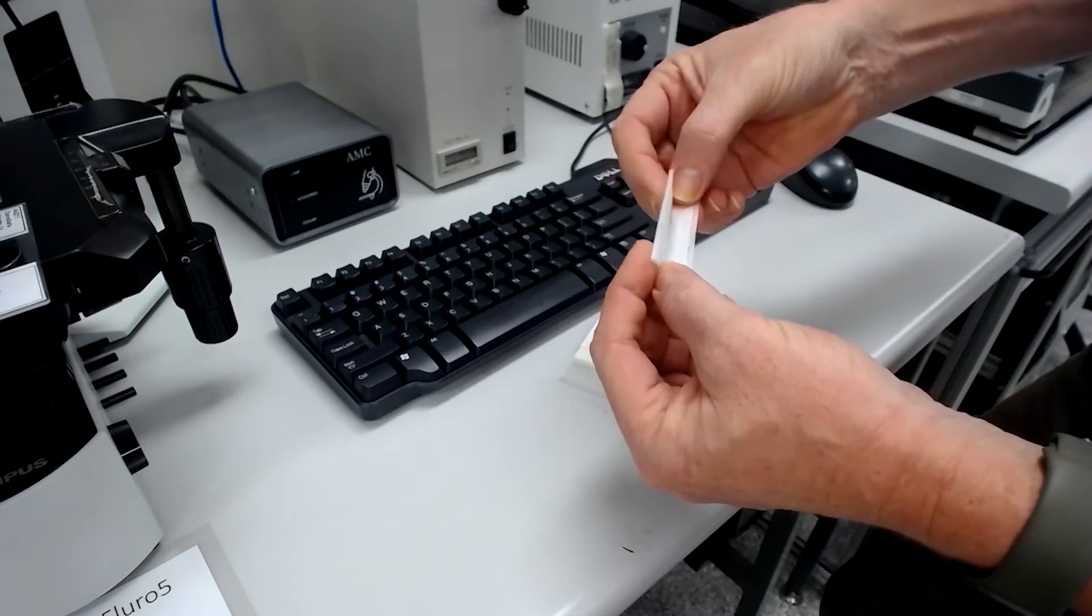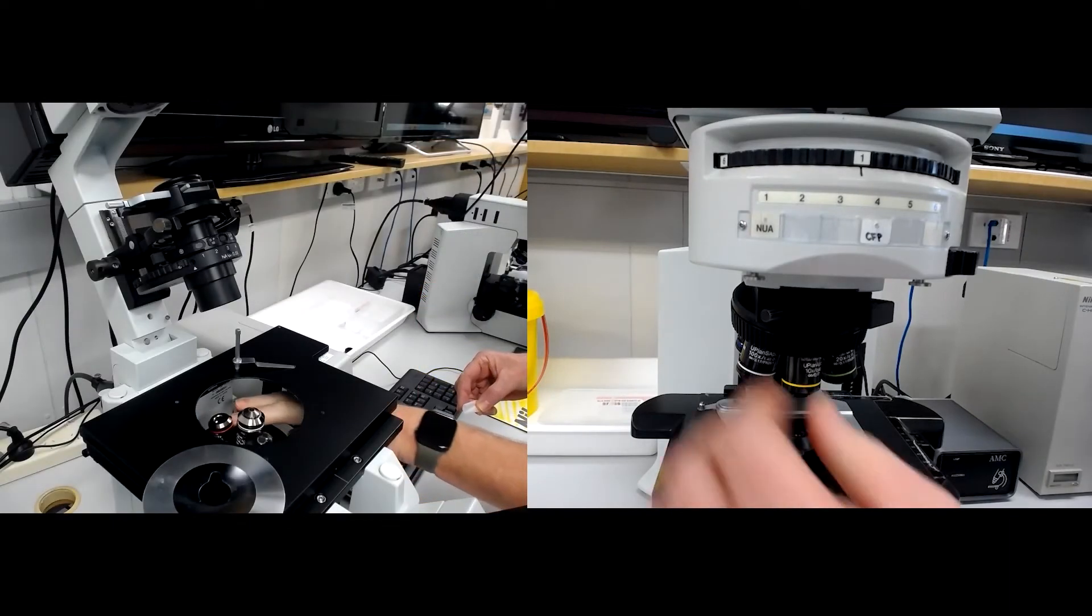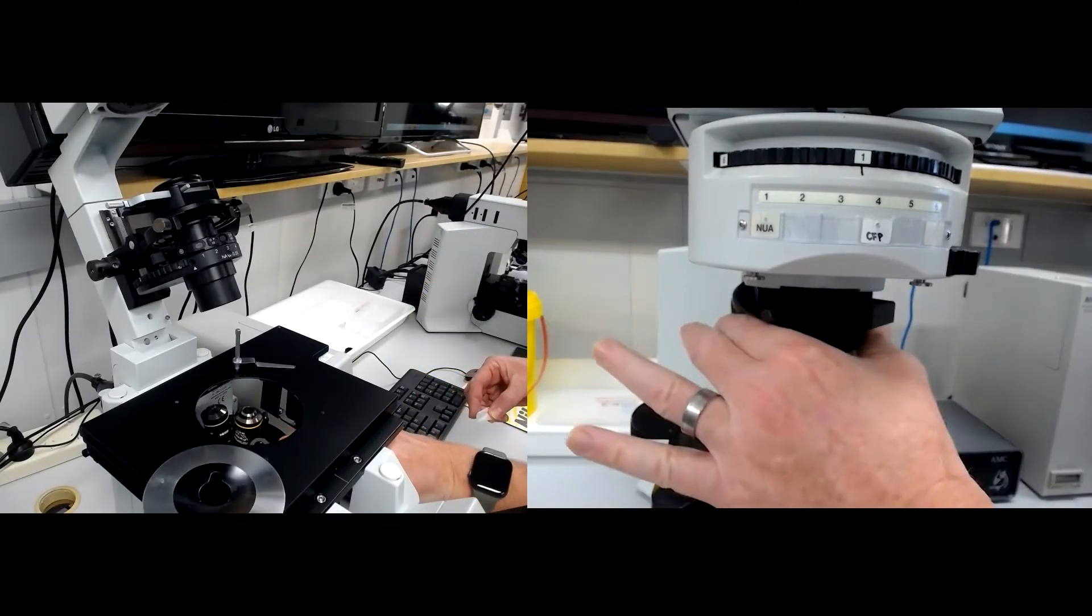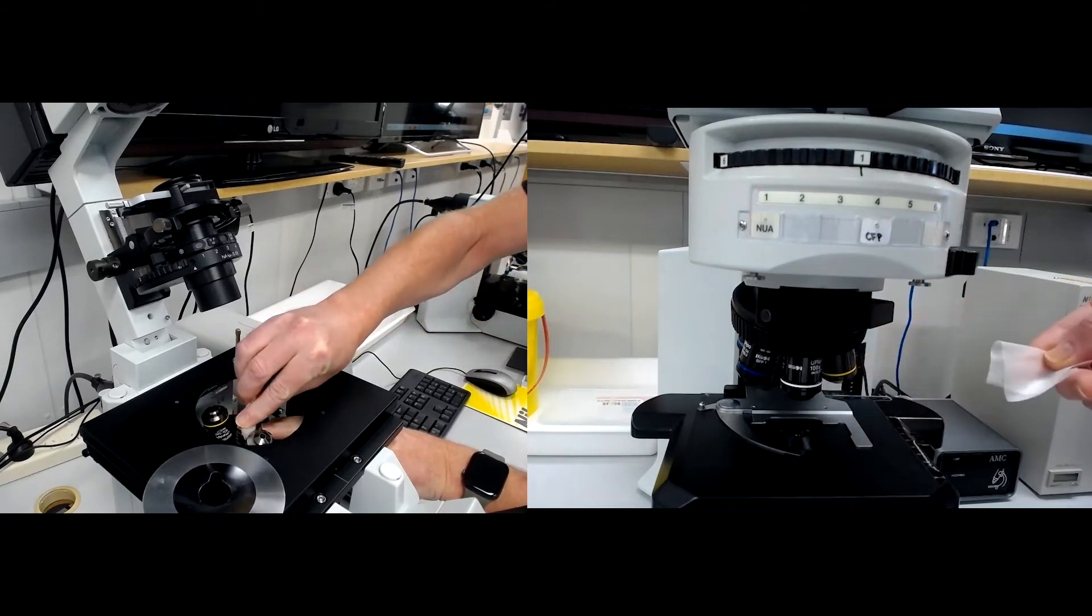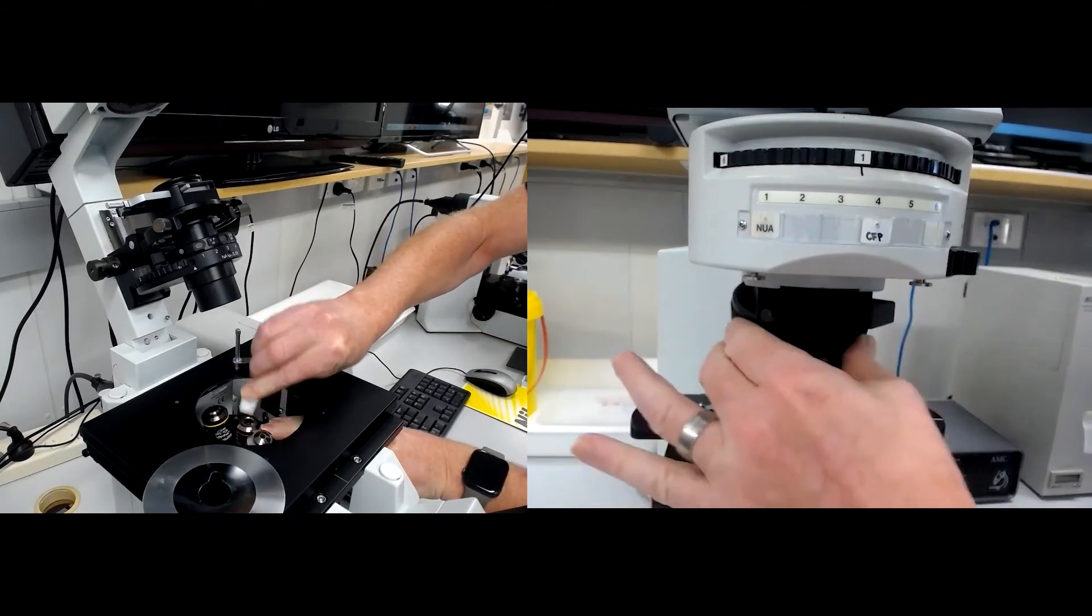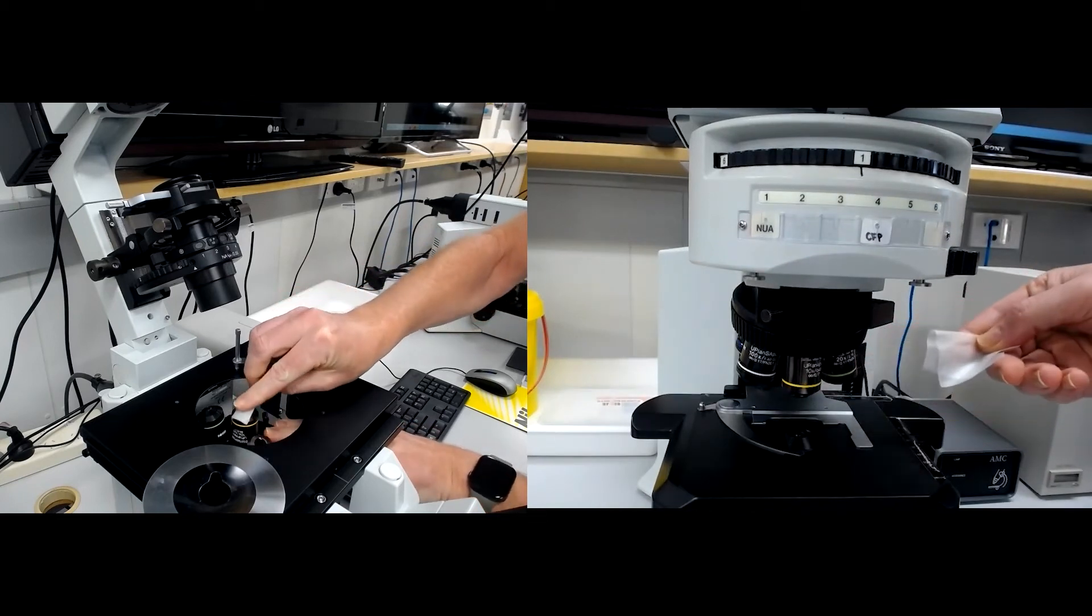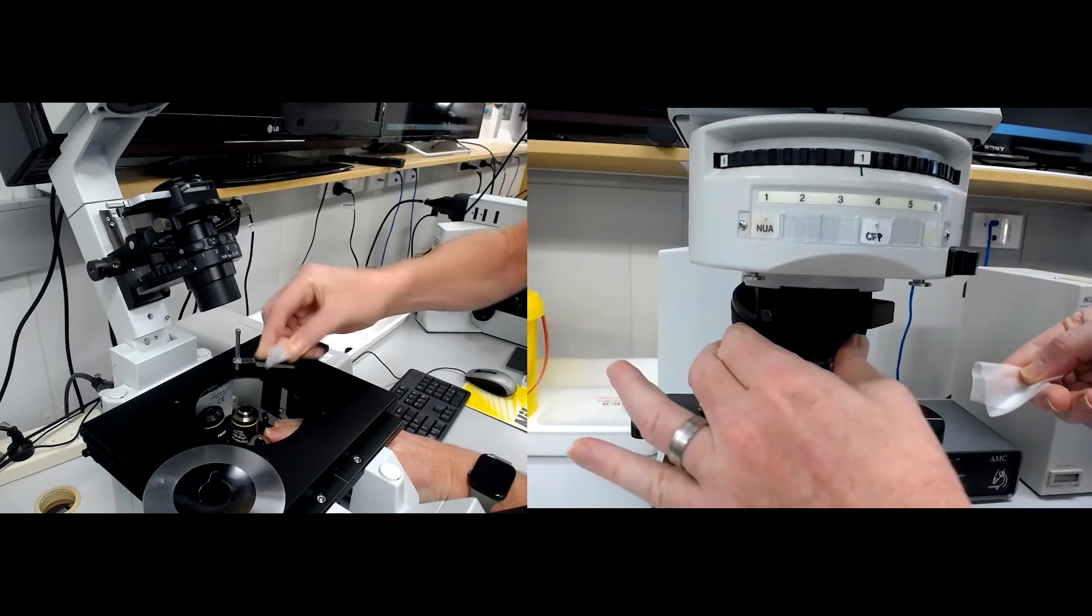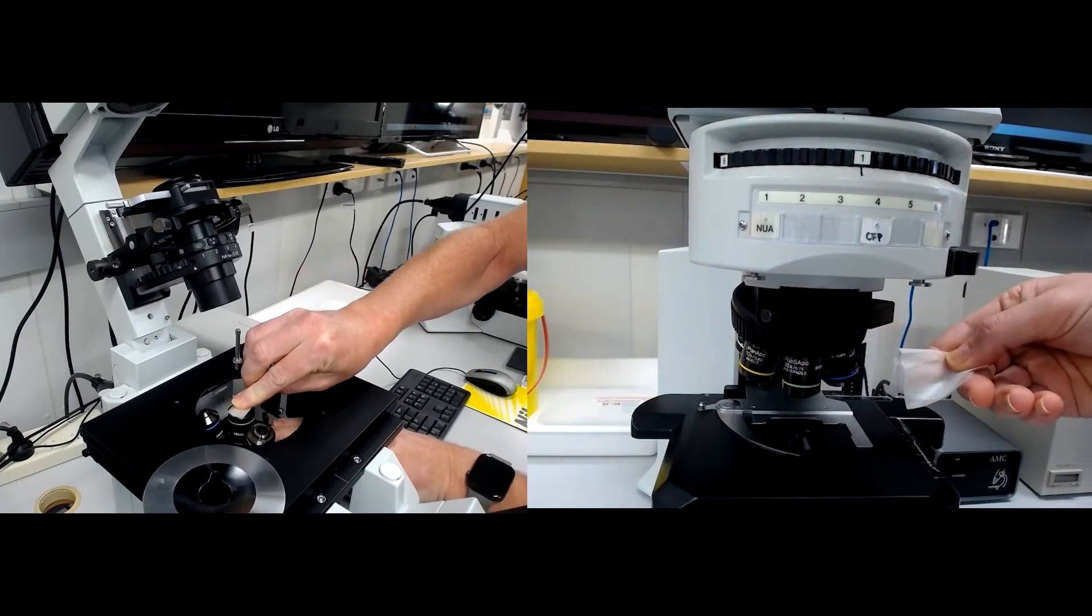Fold the tissue in half, then fold it in half again. Turn the turret so the objective is accessible on the side and push gently to conform your finger to the lens. Wipe in one direction. It is important to not wipe back and forth as any dirt on the objective could potentially scratch the lens.